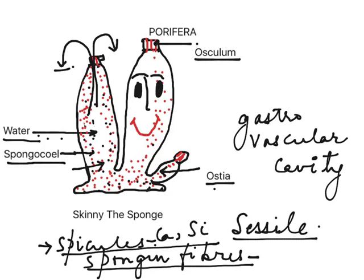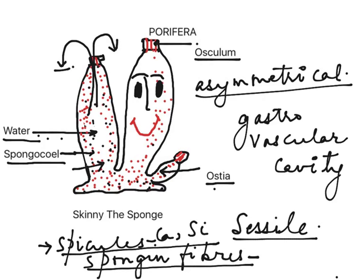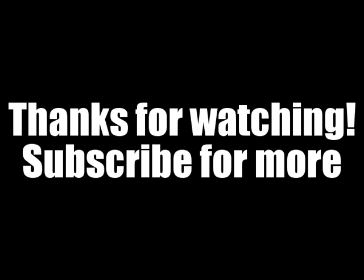If we talk about the symmetry of this animal, most of them are asymmetrical. Those which cannot be divided into two equal halves from any plane are termed asymmetrical animals. They reproduce asexually through fragmentation, and also by sexual reproduction. We will sum up all these points in the next video for Phylum Porifera, so stay tuned — bye bye!